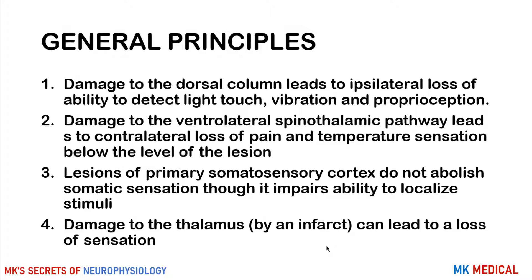Some general principles before we talk about the lesions. Number one: damage to the dorsal column leads to ipsilateral loss of the ability to detect light touch, vibration, and proprioception. If you damage the ventral lateral spinal pathway, this leads to contralateral loss of pain and sensation below the level of the lesion. Remember that all these damages are affected below the level of the lesion — if T6 is affected, everything below T6 will not carry those sensations.